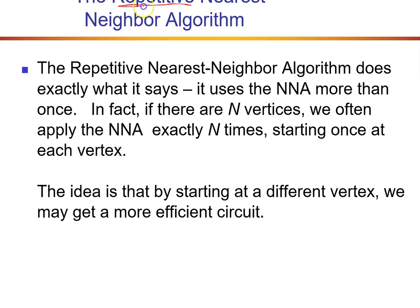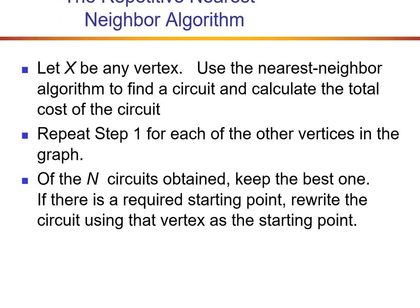This is where the repetitive nearest neighbor algorithm comes in. This isn't necessarily a new algorithm — it uses the nearest neighbor more than once. If there are N vertices, we apply the nearest neighbor algorithm N times, meaning we do starting point A, then starting point B, then go through all the different vertices as different starting points. Then we compare and use the most efficient one. So if I have five vertices, I'm doing nearest neighbor five times.